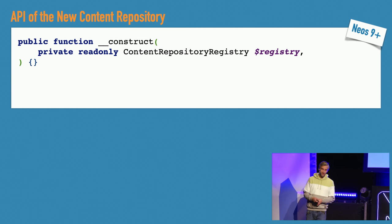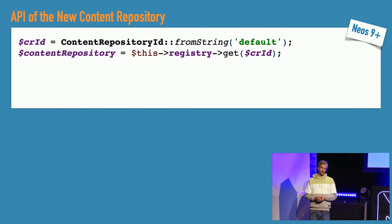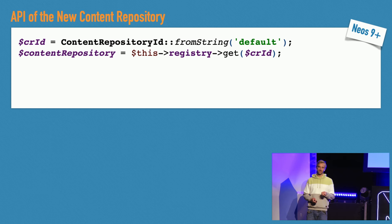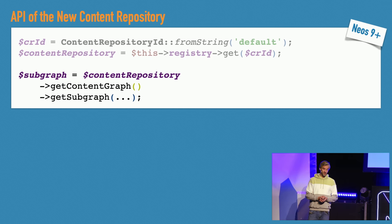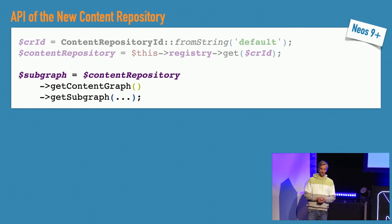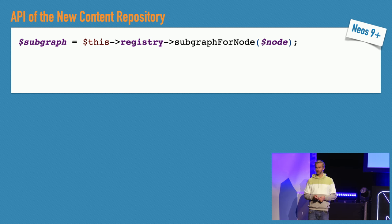We can inject the content repository registry with constructor injection. From there you get the content repository instance. Neos 9 will come with a pre-configured default content repository. That will be your single point of interaction — every mutation to the content has to go through this instance, and it provides access to all the read models that allow you to query the state of your content repository. The most important API for reading is the content subgraph. Bernhard will probably cover this tomorrow, but remember: this will be your bread and butter API for querying nodes, and there's a shortcut to get an instance from any given node.